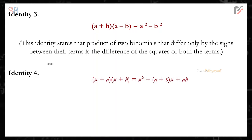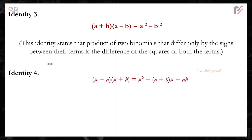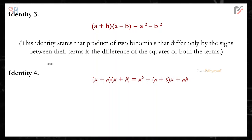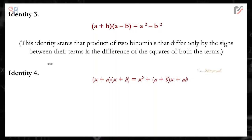Identity 4: (x + a)(x + b) is equal to x² + (a + b)x + ab.